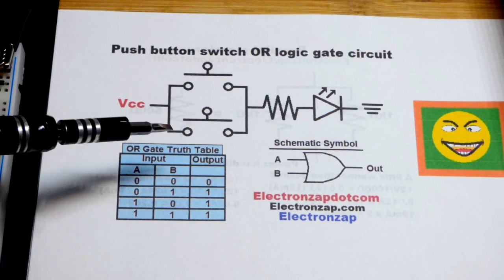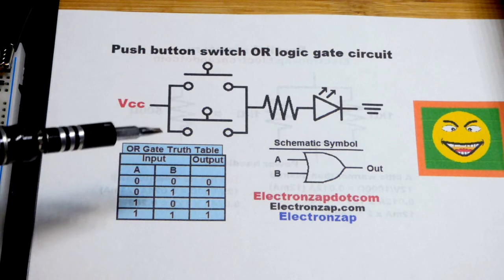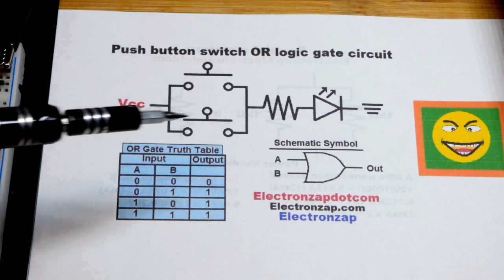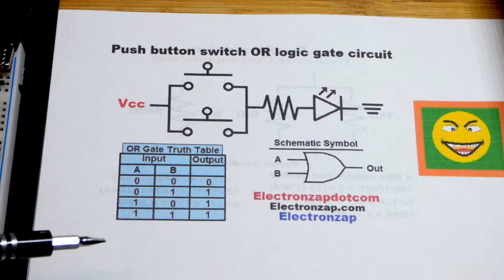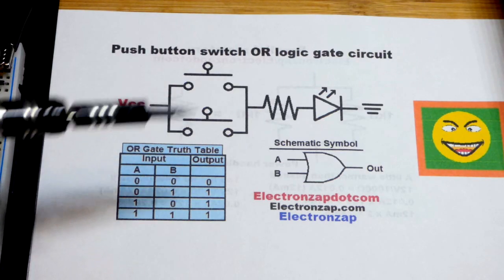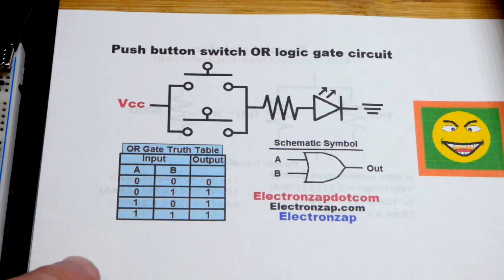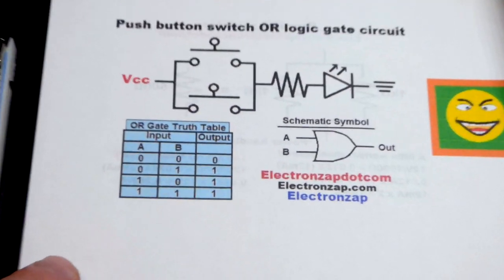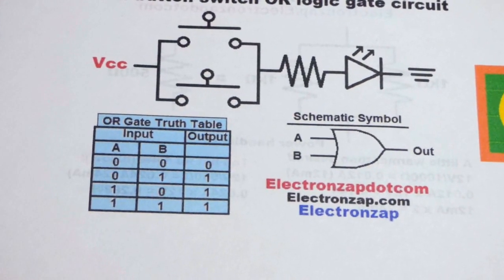And the OR logic gate means that if one input or the other input, or even both of them, are on, then the output will be on, if you're using on and off. There's also ones and zeros, and high and low.